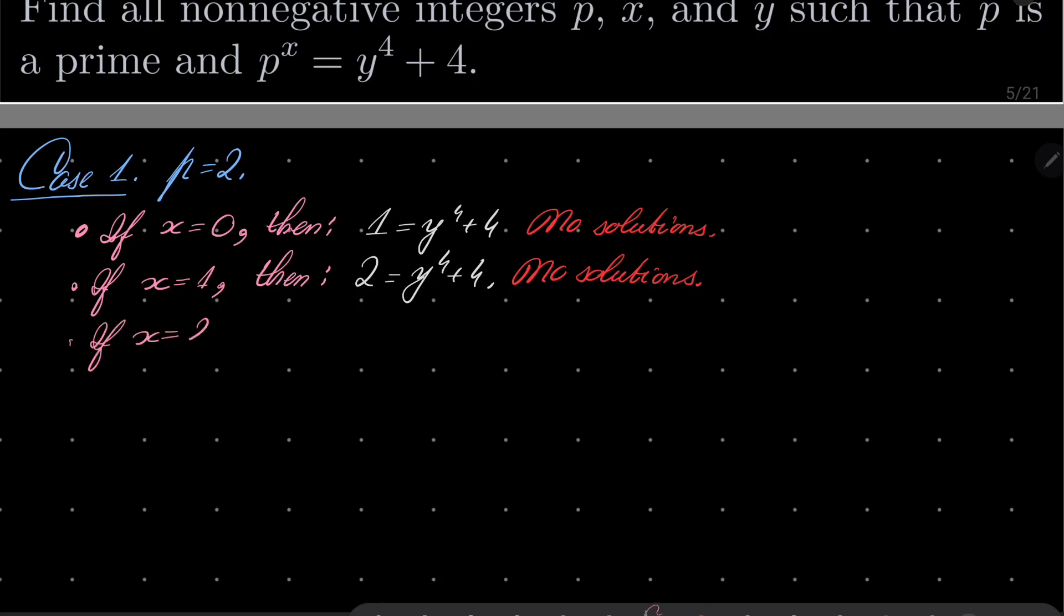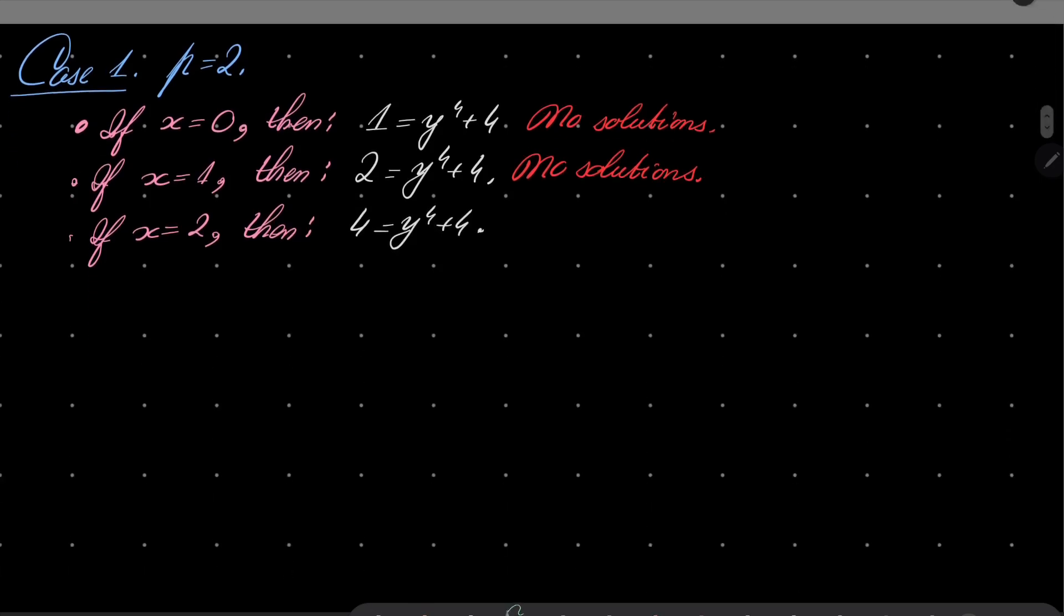If x equals 2, then we have 4 = y^4 + 4, and we have exactly one solution, namely y must be equal to 0.